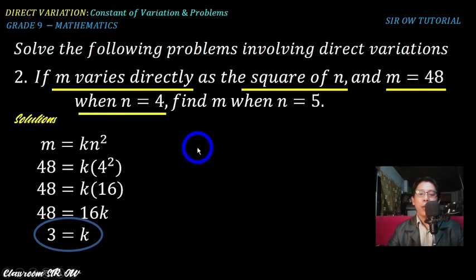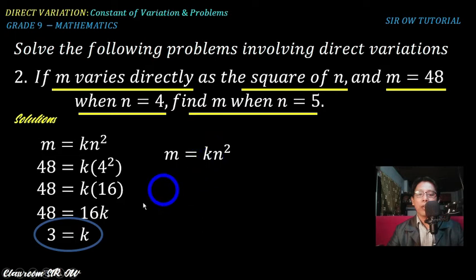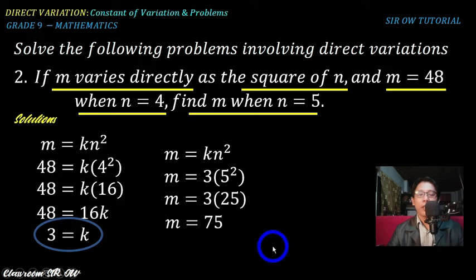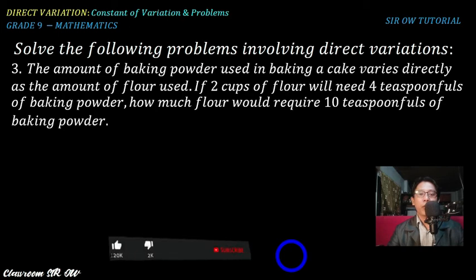Now we are asked to find m when n = 5. Using m = kn² with k = 3 and n = 5, we get m = 3 × 5² = 3 × 25 = 75. Therefore m = 75.